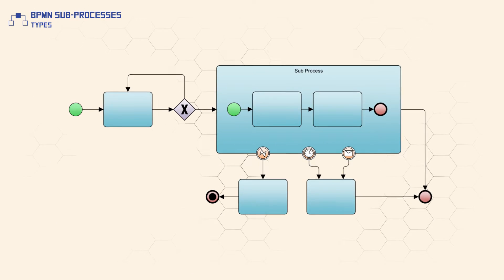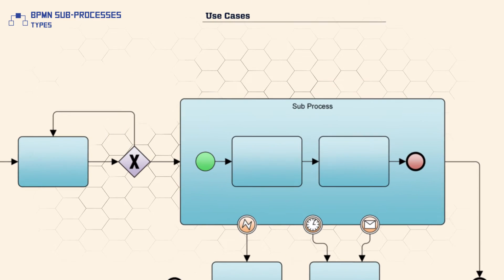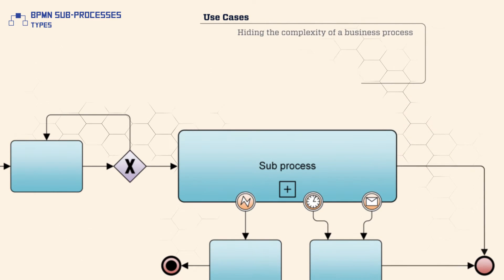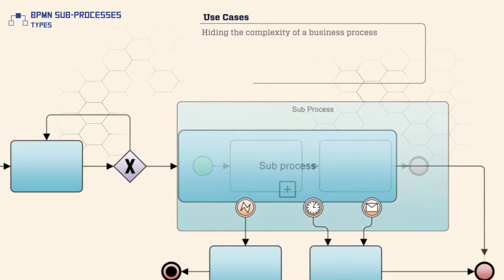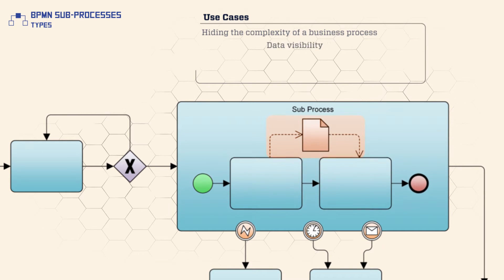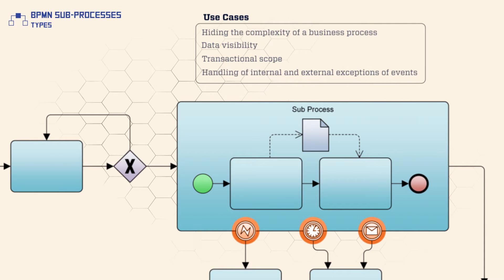In a business process, subprocesses have a number of uses including hiding the complexity of a business process or defining a contextual scope that can be used for data visibility, transactional scope, or the handling of internal and external exceptions or events.